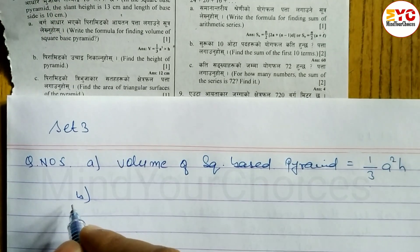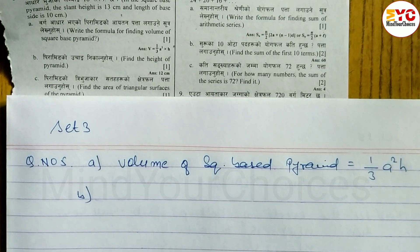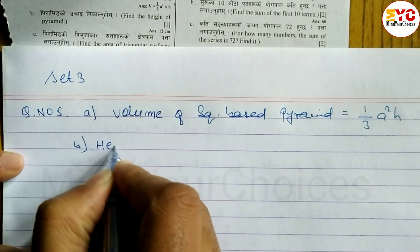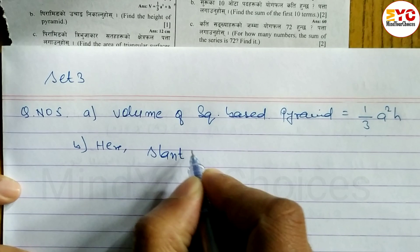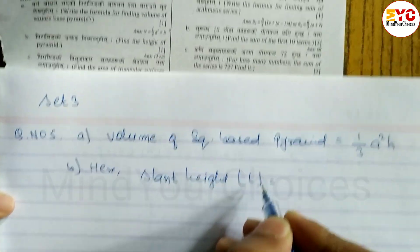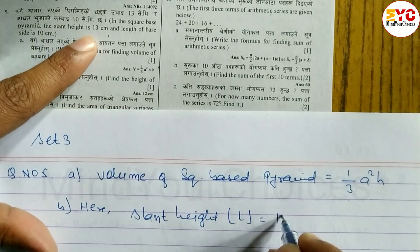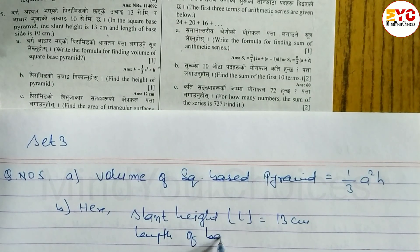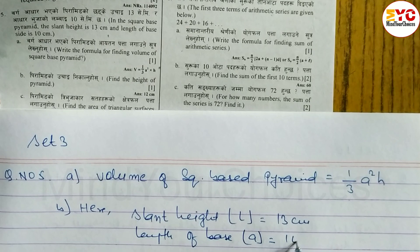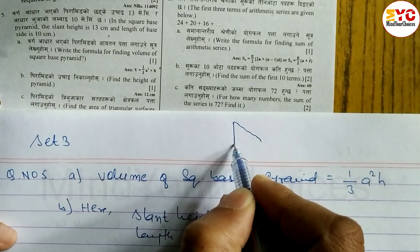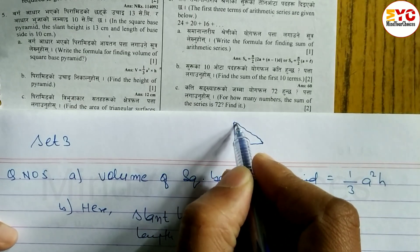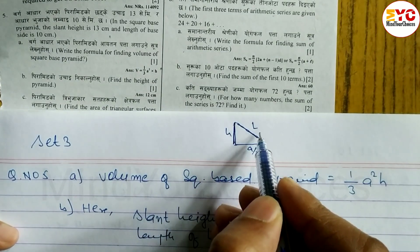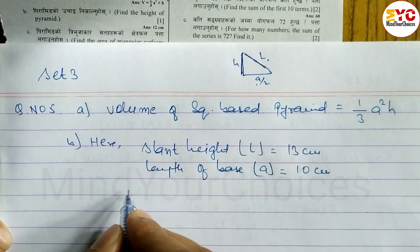Number B: find the height of the pyramid — that is the vertical height. Slant height L is equal to 13 cm and length of base A is equal to 10 cm. The vertical height H, slant height L, and half of base (a/2) form a right triangle. So the formula is H equals root under L squared minus (a/2) whole squared.